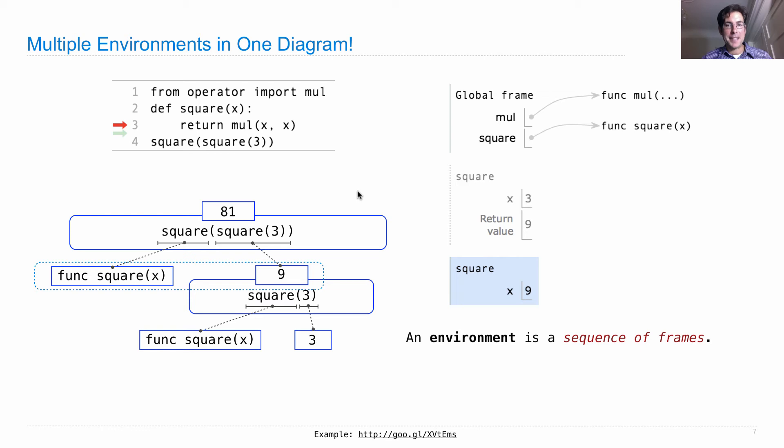An environment is a sequence of frames. So far, all the environments we've seen are the global frame alone, or a local frame followed by the global frame. So let's find all the different environments in this environment diagram. There are not one, not two, but three. There is what we call the global environment, which is nothing but the global frame. So it's a sequence of length 1.